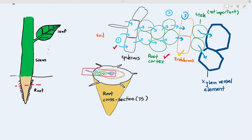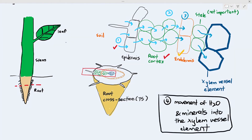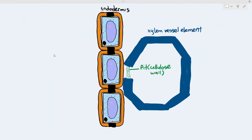From the endodermis, the water and minerals then go through to the xylem vessel element. Most parts of the xylem vessel element are surrounded by lignin, which is a rigid waterproof substance. But there is a certain part of the xylem vessel element that is not lignified — that part is the pit, which is a cellulose wall. The cellulose wall is freely permeable, so from the endodermis, the water and minerals simply cross the pit and enter the xylem vessel element.